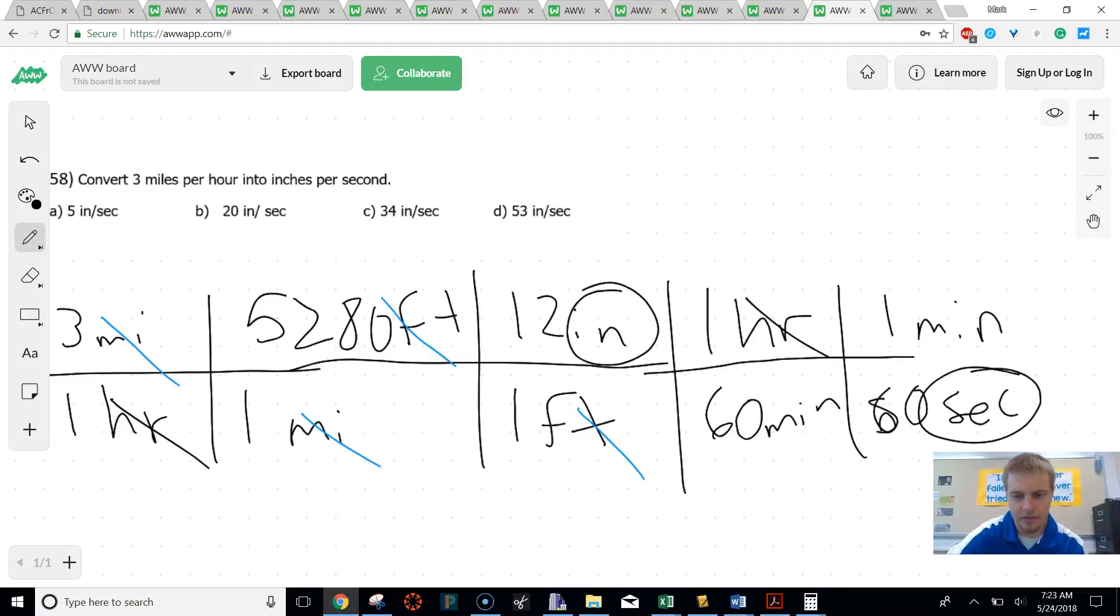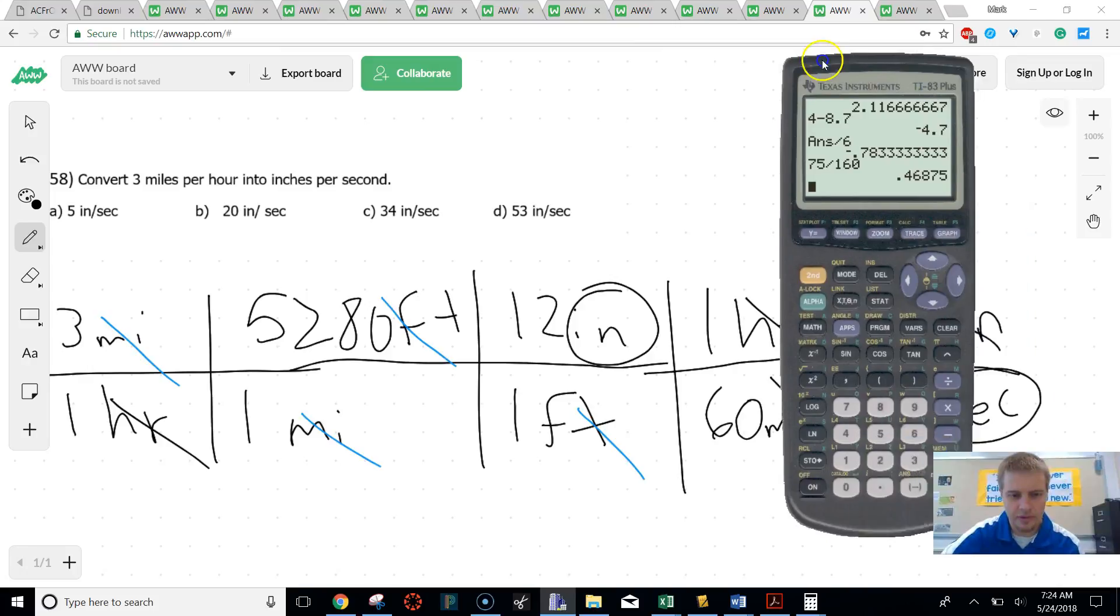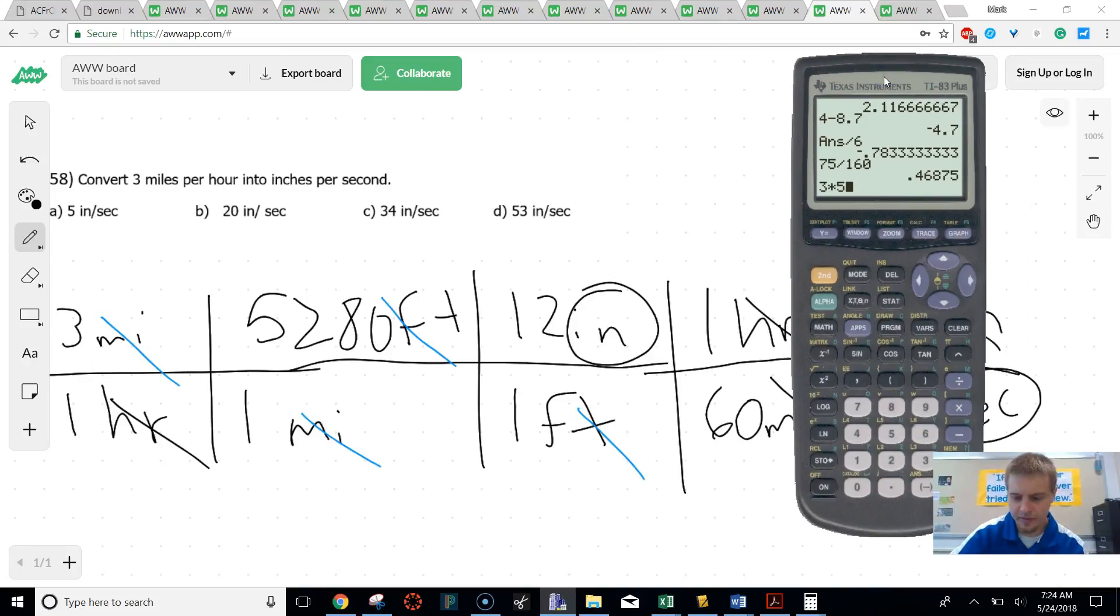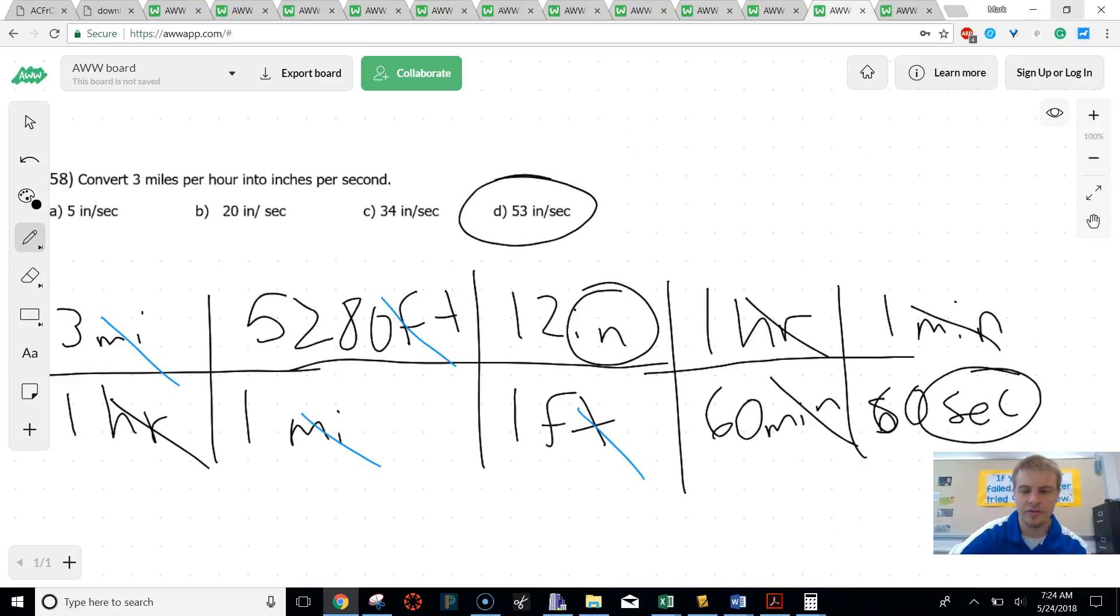And that's going to give me my correct unit on bottom, and I cancel out all other units. So the two units we have left is inches and seconds, which is what we want. We're then going to put it in our calculator. So I'm going to do 3 times 5,280 times 12 times 1 times 1. And then I'm going to do 1 times 1 times 1 times 60 times 60. And then we're going to divide these things to see how much they are. And we're going to get 52.8 inches per second, or that is really close to 53.